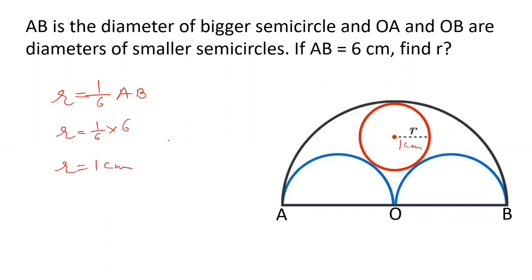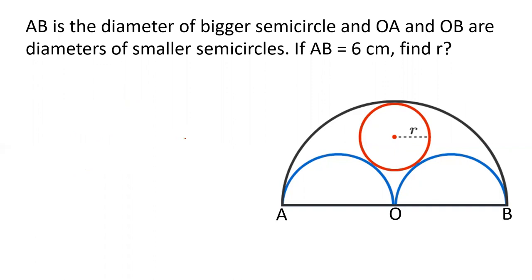Now, let's see how this question is solved step by step. Friends, these three semicircles have an inscribed circle. If I take the center O — with OA and OB — these two smaller semicircles are centered at O. Look, if AB is 6 centimeters, then OA is 3 centimeters.